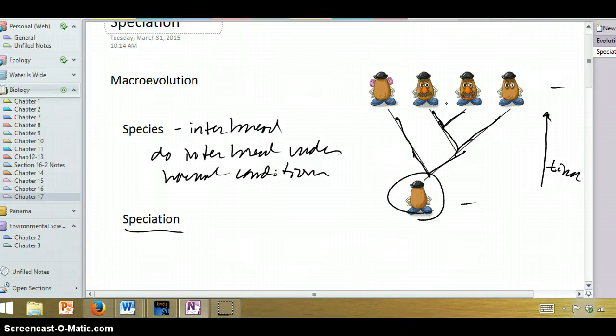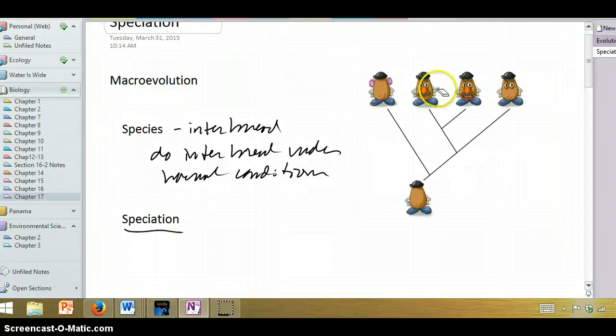One species has given rise to four, and essentially in this diagram, wherever you have a branch point, that essentially is a speciation event that occurred sometime in the past.